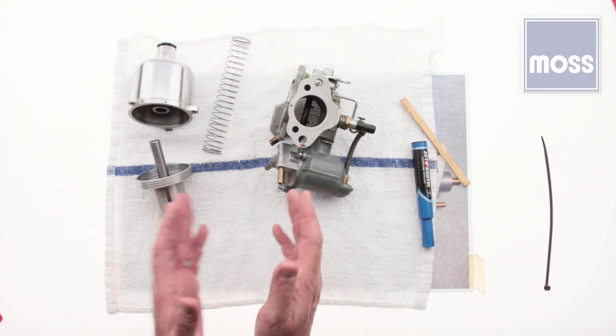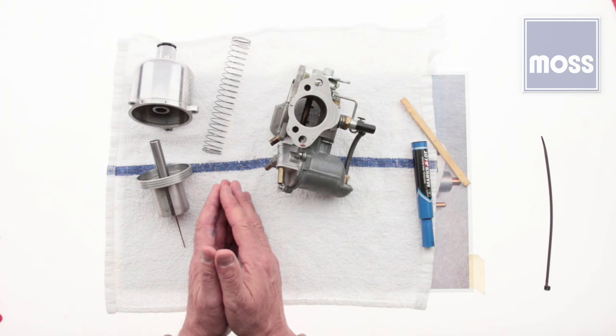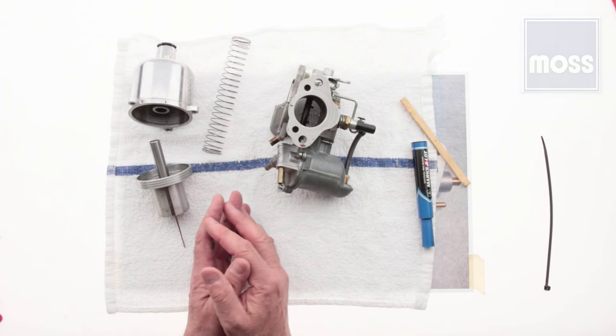So there she is, the constant depression side draft carburetor, an example of elegant engineering in a package that's so simple, it seems to thrive on neglect. Thank you.